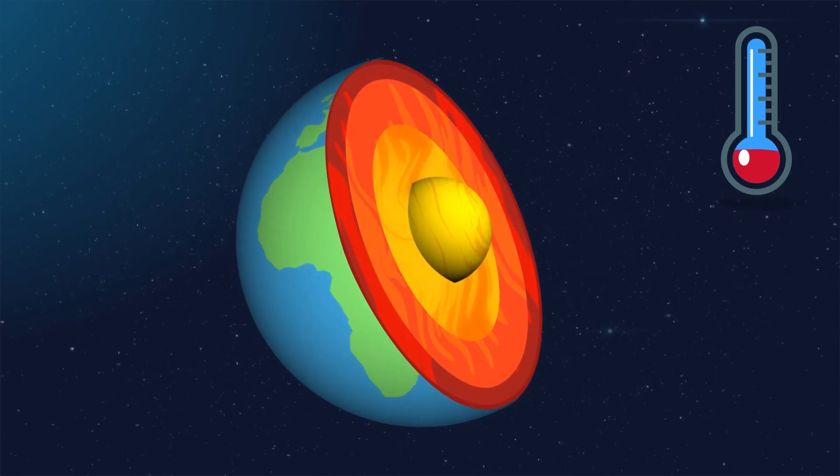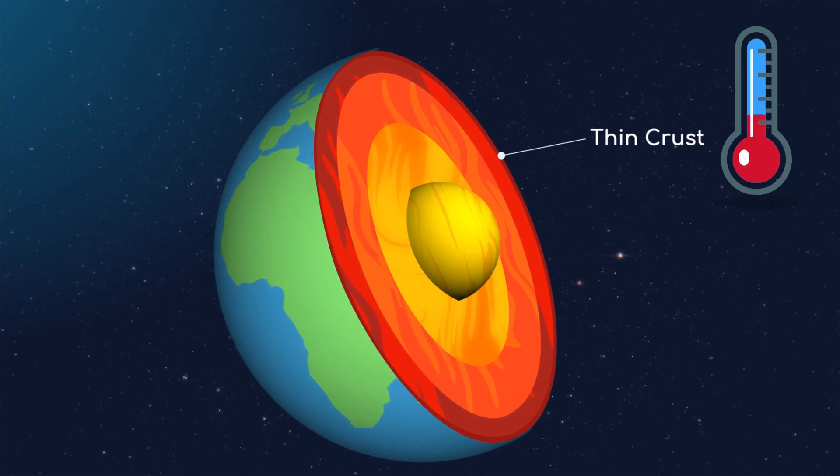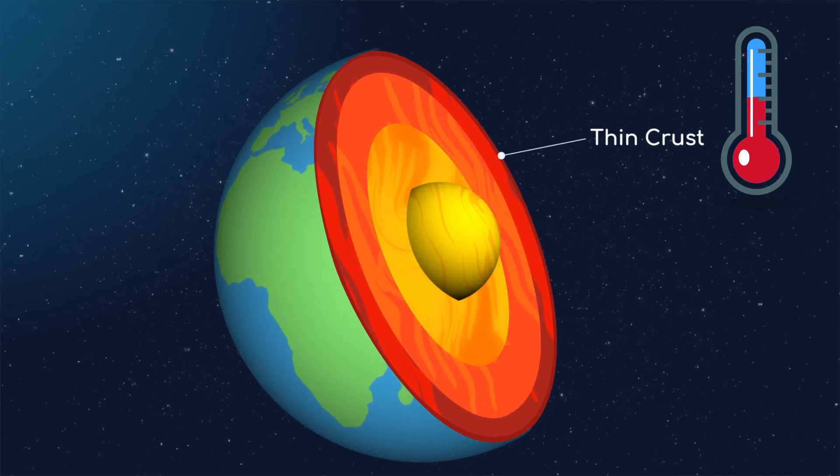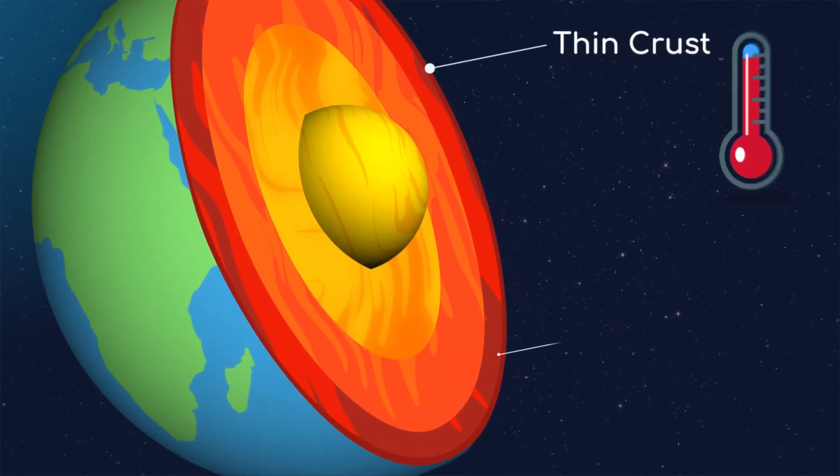If you went deep into the Earth, it gets very hot. The Earth has a thin crust like a loaf of bread. If you went through the crust to the next layer, it is so hot that the rocks have melted and are in a liquid form.